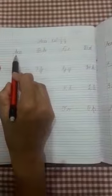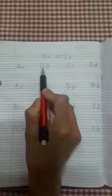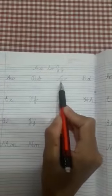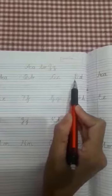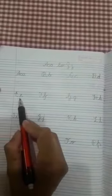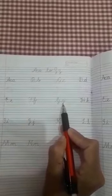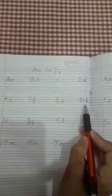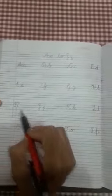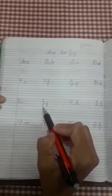Let us revise. A for apple, B for ball, C for cat, D for dog, E for elephant, F for fish, G for grapes, H for hen, I for ice cream, J for jug, K for kite and L for lamb.